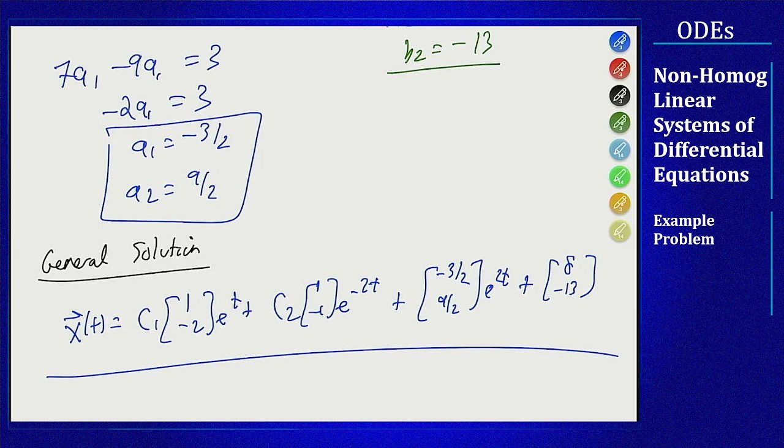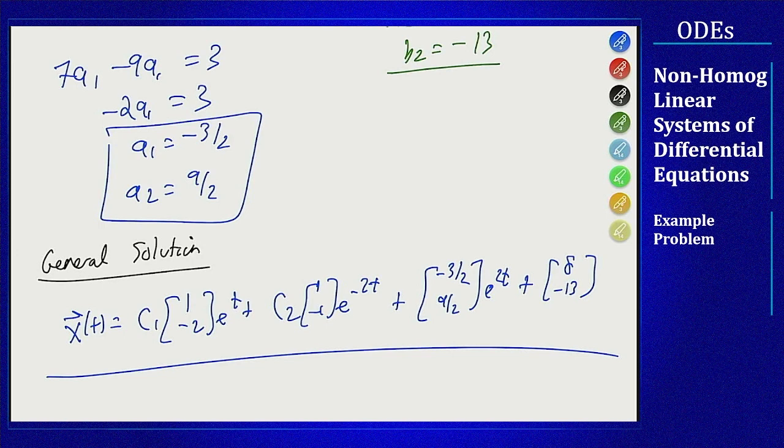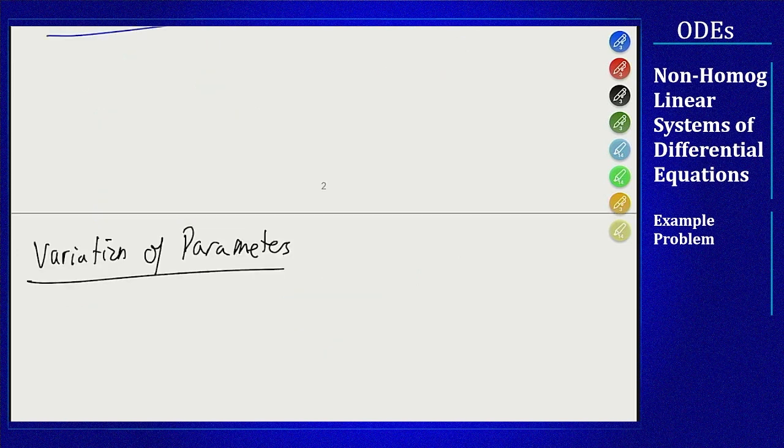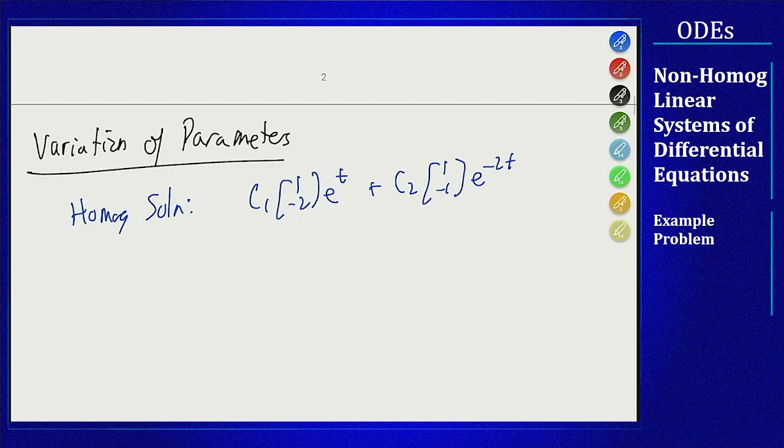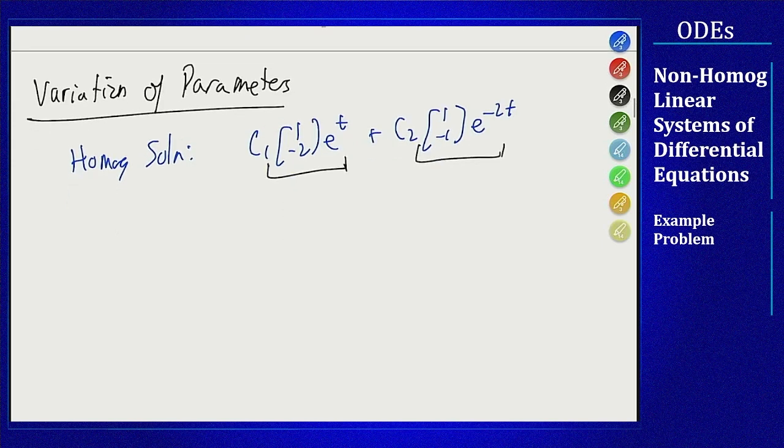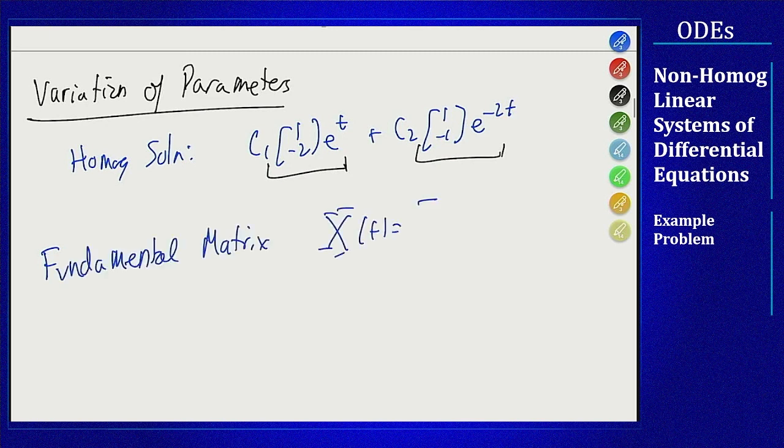Our last method here is variation of parameters. We're going to build off of this here. We already have our homogeneous solution and that means that from this we can build our fundamental matrix where I am going to take this as the first column and this as the second column. So my fundamental matrix x of t has first column e to the t minus 2 e to the t, second column is e to the minus 2t minus e to the minus 2t.